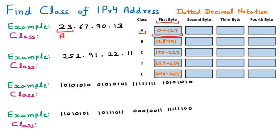Now discussing the next example, which is again in dotted decimal notation. We focus on the first byte, which is 252. Since 252 falls under the range of Class E, this IP belongs to Class E.